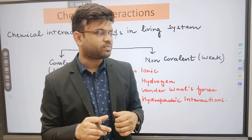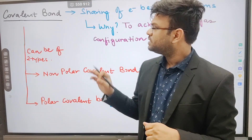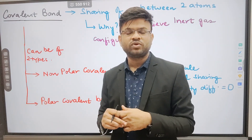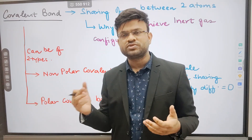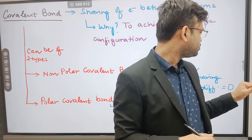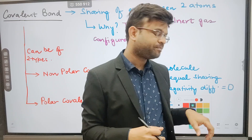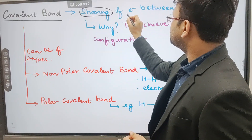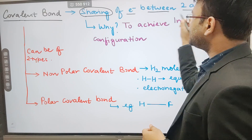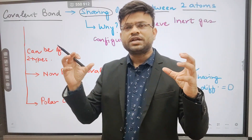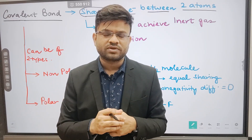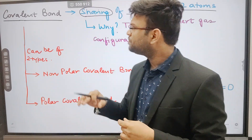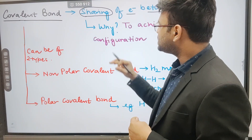In this slide I would be delving deep into covalent bonding. To remind you, this lecture is about covalent bonding and as we proceed we will discuss other bonds also. What is a covalent bond? A covalent bond is formed by sharing of electrons between two atoms. You need to remember this term — sharing of electrons between two atoms. Why are they involved in sharing? I will be talking about that in a bit.